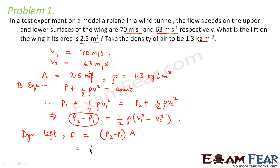Therefore this will be equal to half rho v1 square minus v2 square into capital A. So we know the values of rho, v1, v2 and capital A.